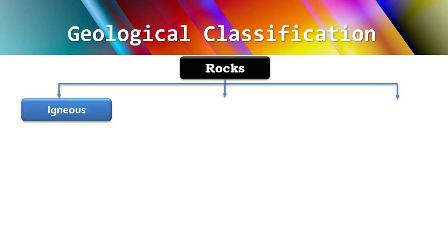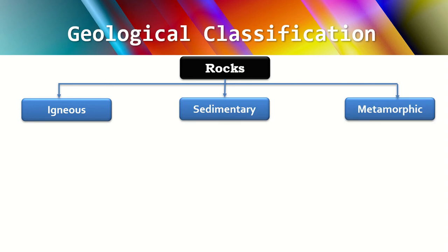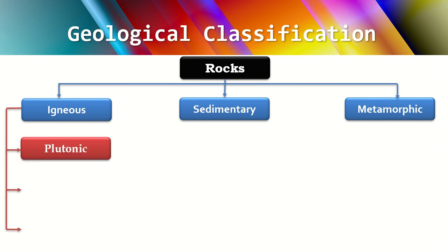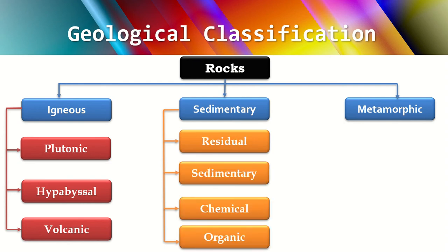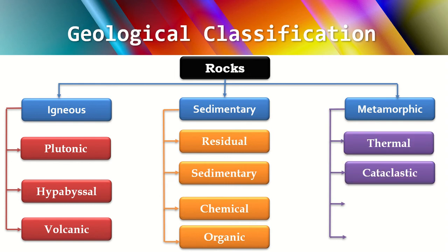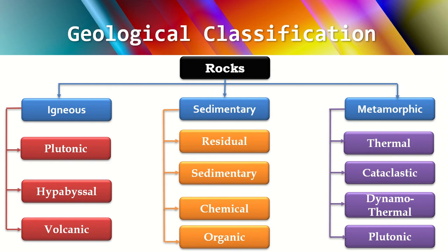In geological classification, rocks are generally classified into three types: igneous, sedimentary, and metamorphic rocks. Igneous rocks are formed by the cooling of magma. Sedimentary rocks are those transported from their place of origin. Metamorphic rocks can be either igneous or sedimentary rocks that have changed composition due to heat, pressure, or stress. Igneous rocks are further classified into plutonic, hyperbasal, and volcanic. Sedimentary rocks into residual, sedimentary, chemical, and organic. Metamorphic rocks into thermal, cataclastic, dynamo-thermal, and plutonic.